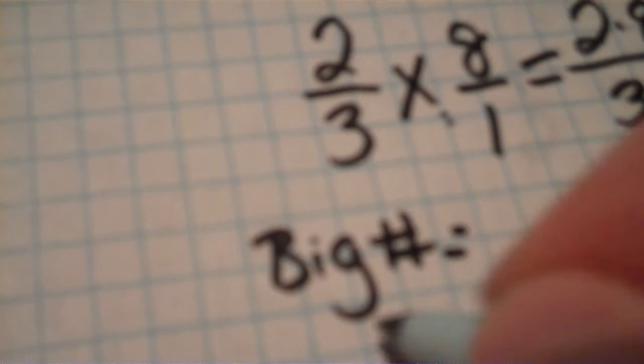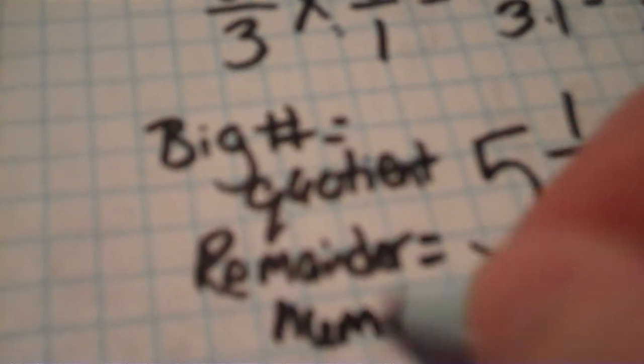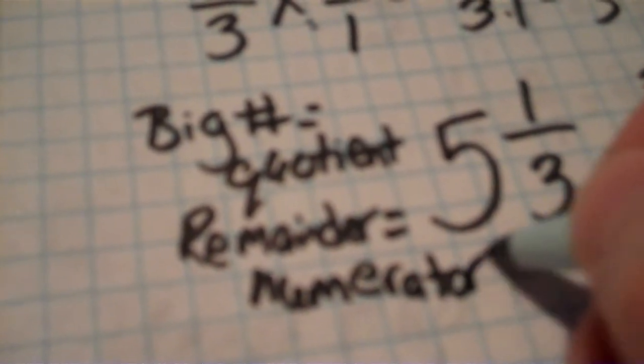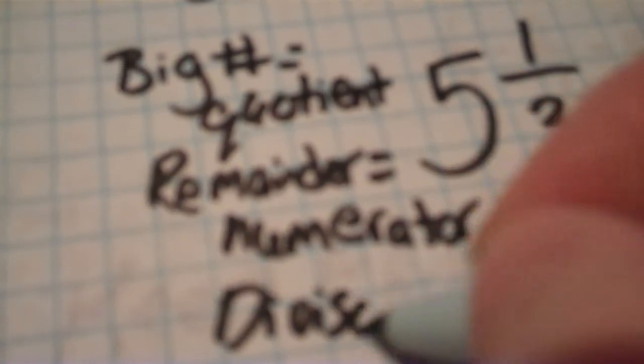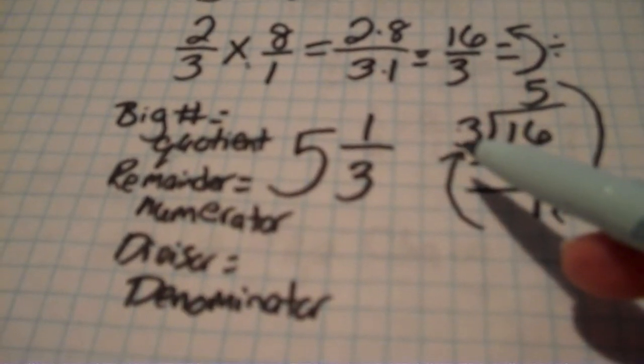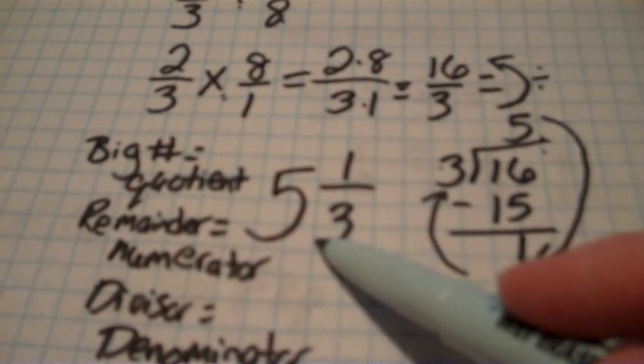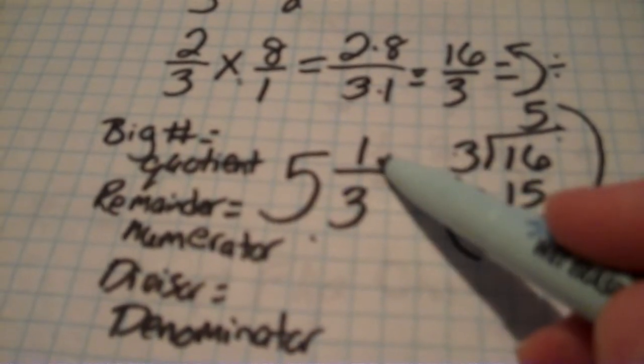Let me write that out: the big number is the quotient, your remainder becomes your numerator, and your divisor becomes your denominator. The big number right up here becomes your quotient. The remainder becomes your numerator and the divisor becomes your denominator.